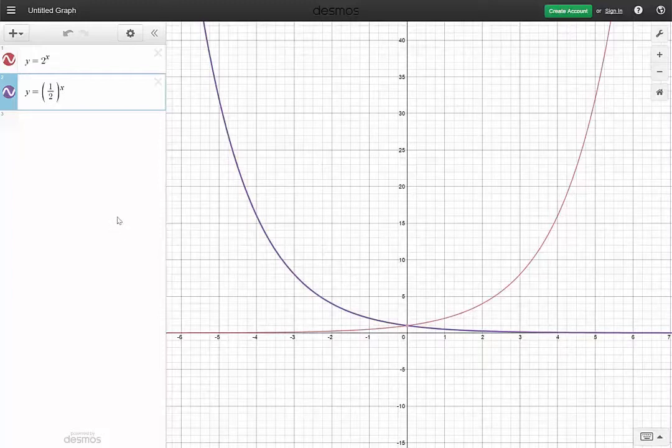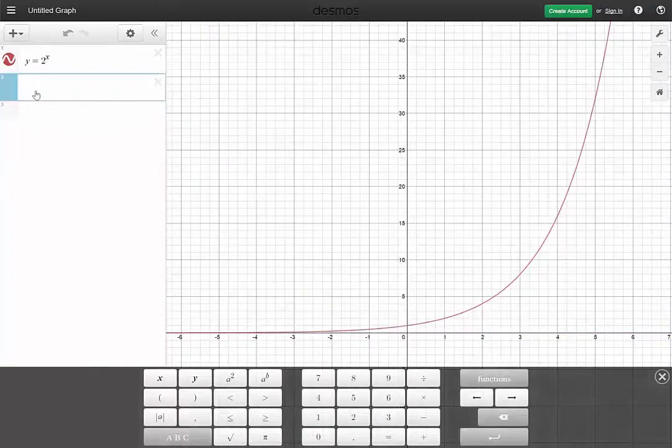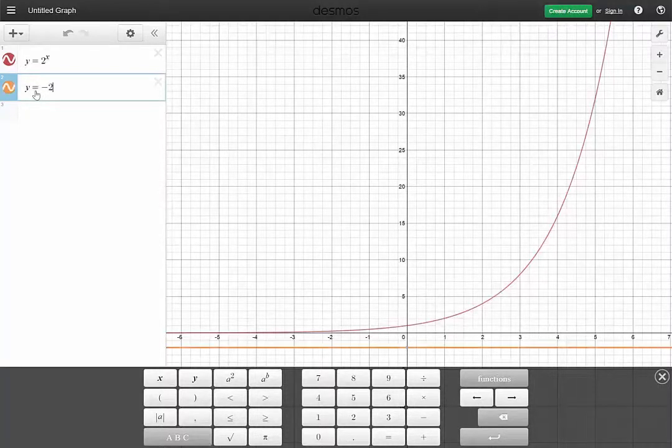Now, another thing we may want to do using this Desmos graphing calculator is see what happens if I multiply by negative 2. So what would happen? Well, y equals negative 2 to the x.